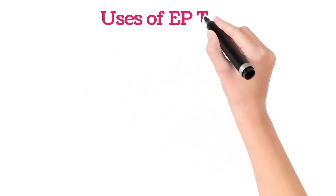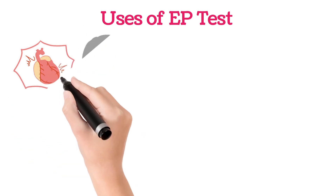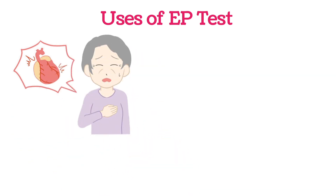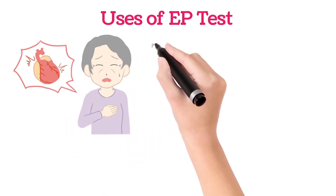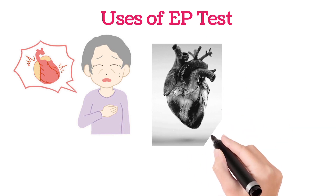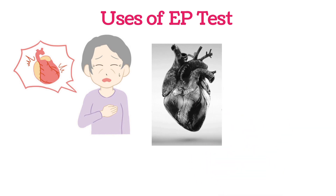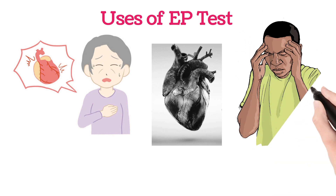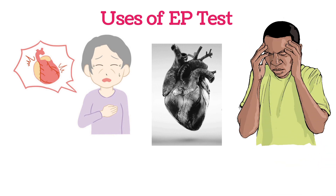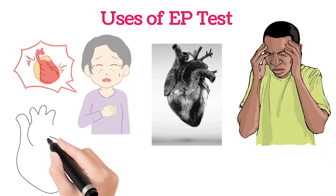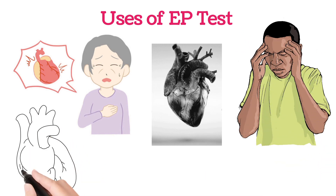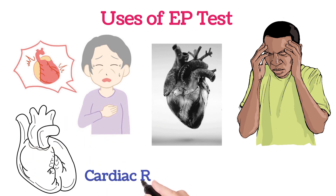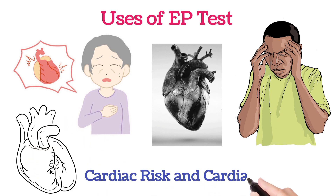With this electrophysiology test, doctors can examine the electrical activity. People who have irregular heart rhythms like arrhythmias, or conditions where the heart beats too fast or too slowly, or conditions with sudden loss of consciousness, and people who have a risk of sudden cardiac death and people who need treatment like cardiac ablation — doctors will suggest this EP test.